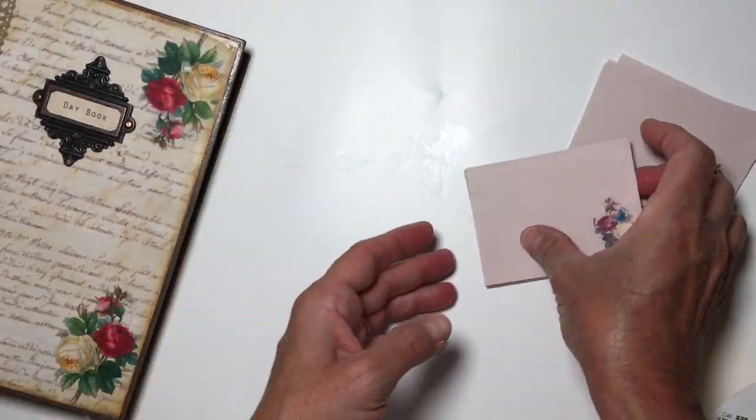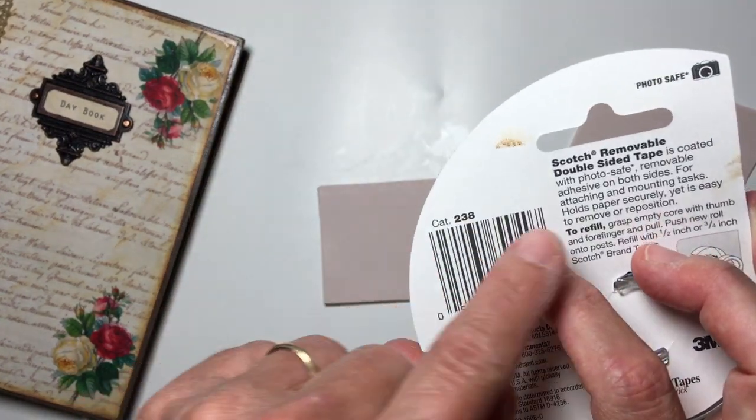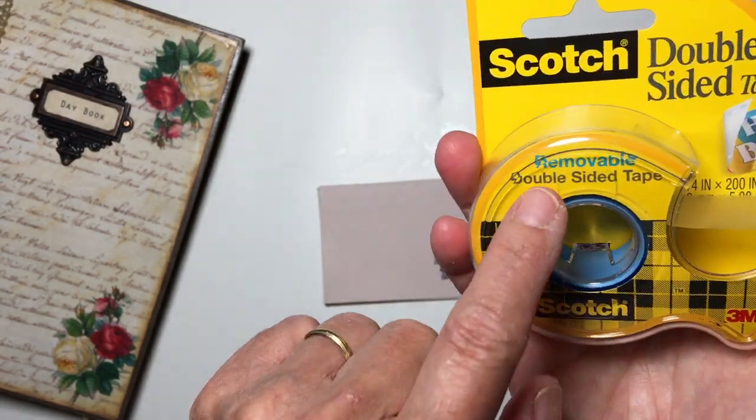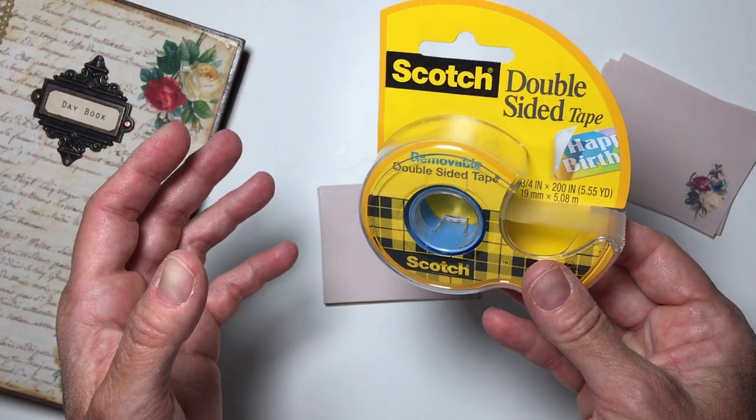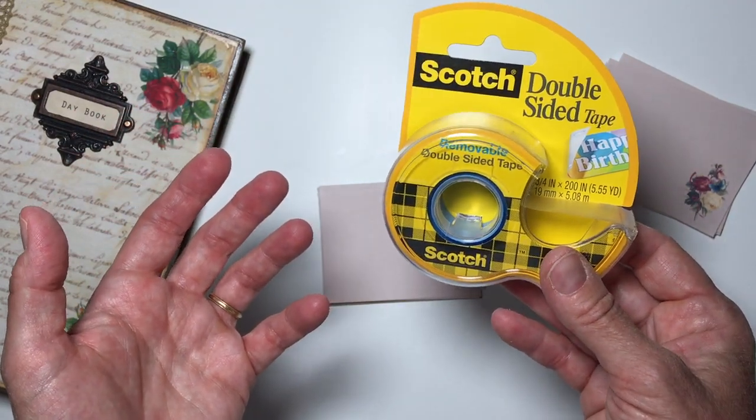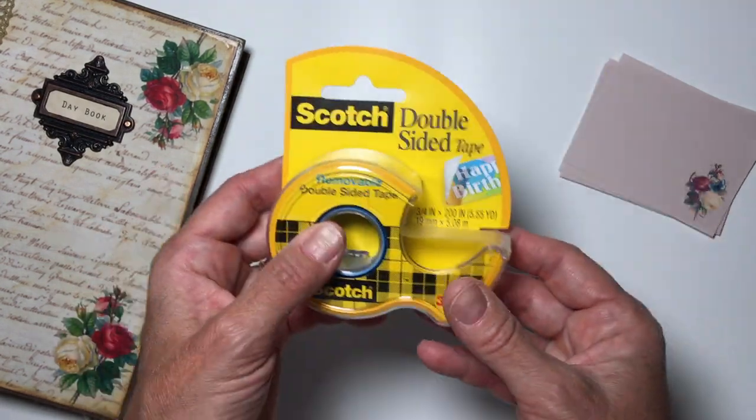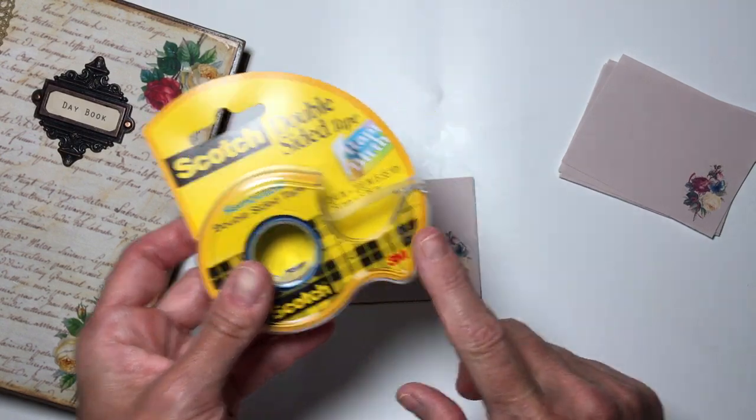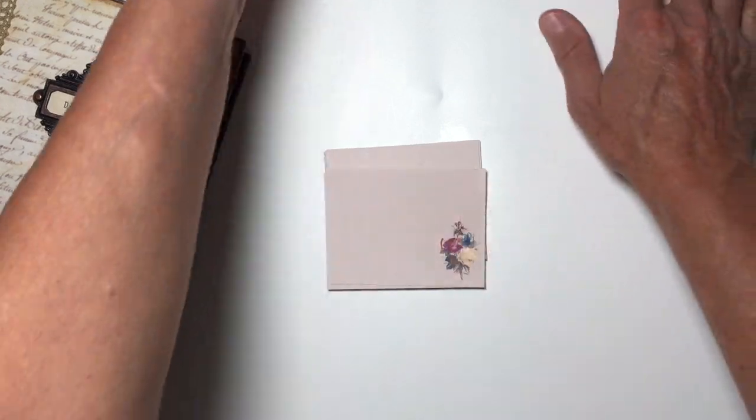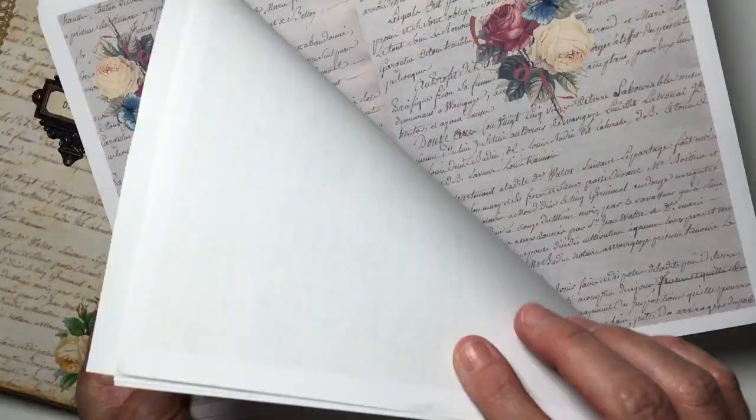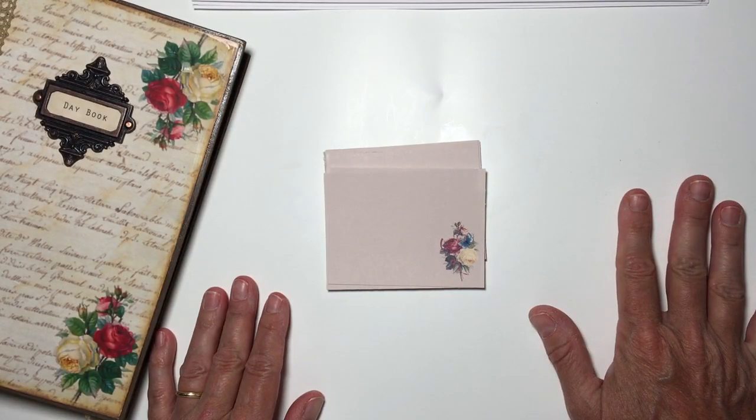So there you have it, DIY sticky notes using the Scotch double-sided removable tape. Remember, you need to make sure you get the removable tape. I got this at Walmart, it's pretty inexpensive and you get 200 inches, that's a lot, over five and a half yards. I highly recommend this and I use this for a variety of other things. I hope you've enjoyed this tutorial and my new digital kit, and I hope I've inspired you to be creative today.